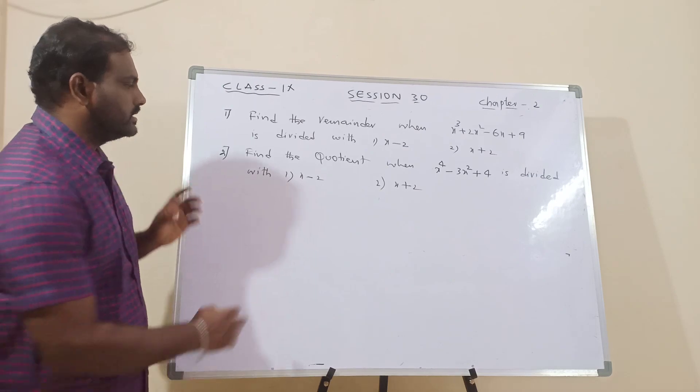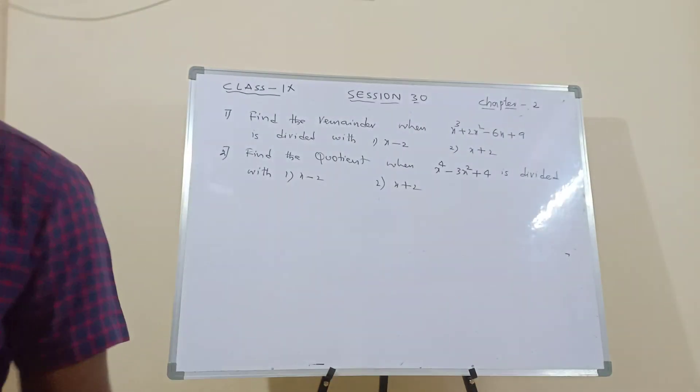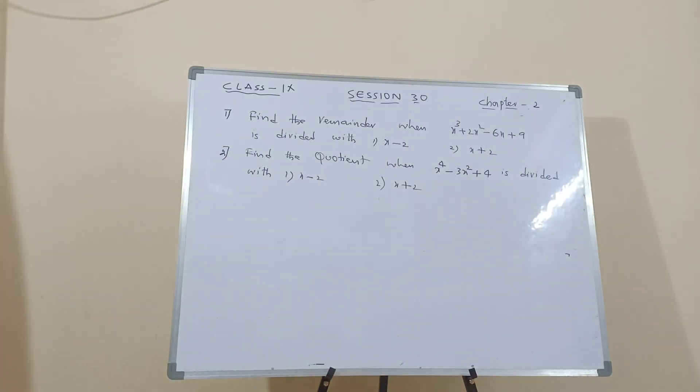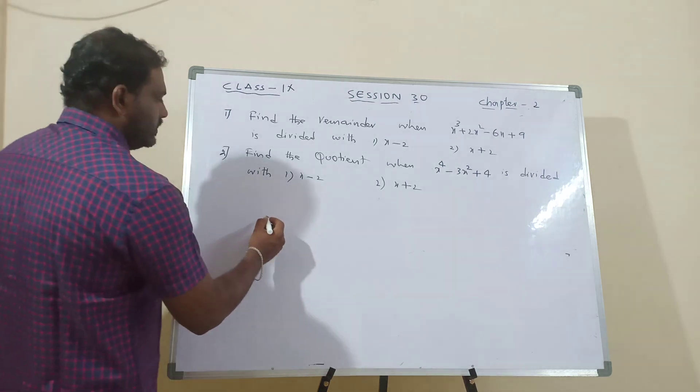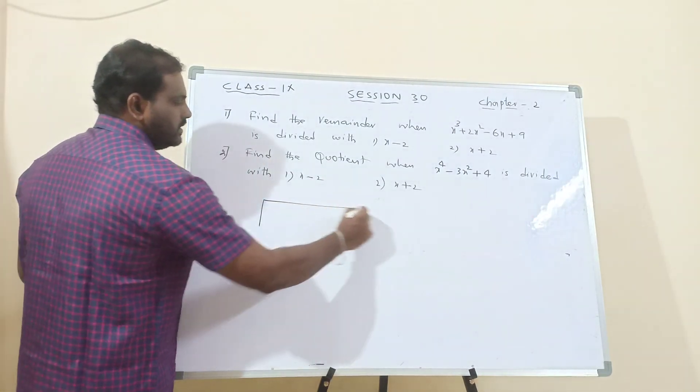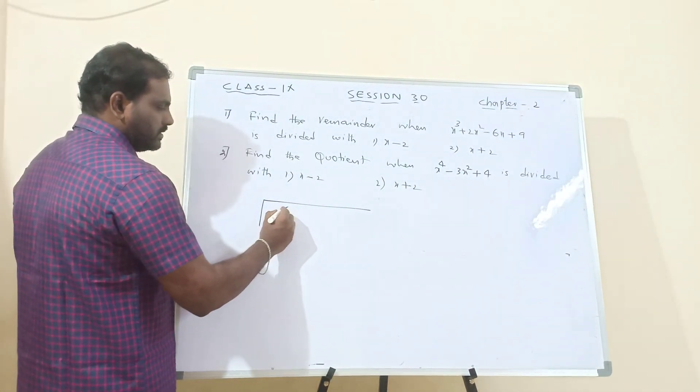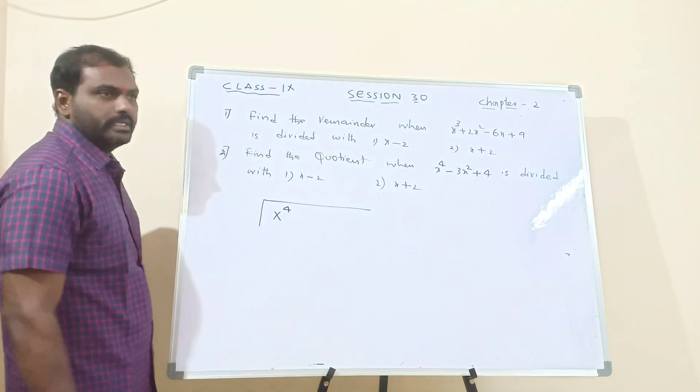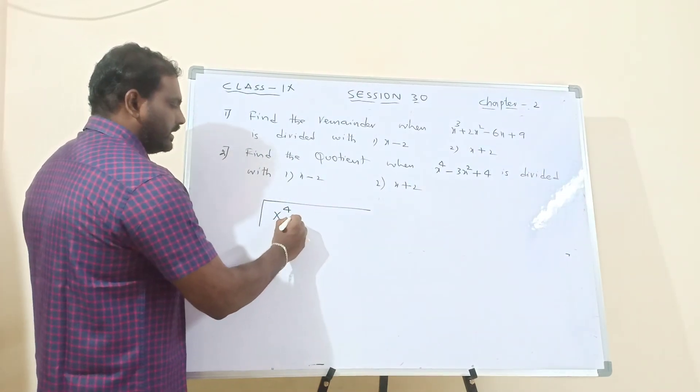So, in this case, what we have to do is, don't write directly x power 4. What we have to do is, so, take x power 4 and I said, the degree must be in the descending order.